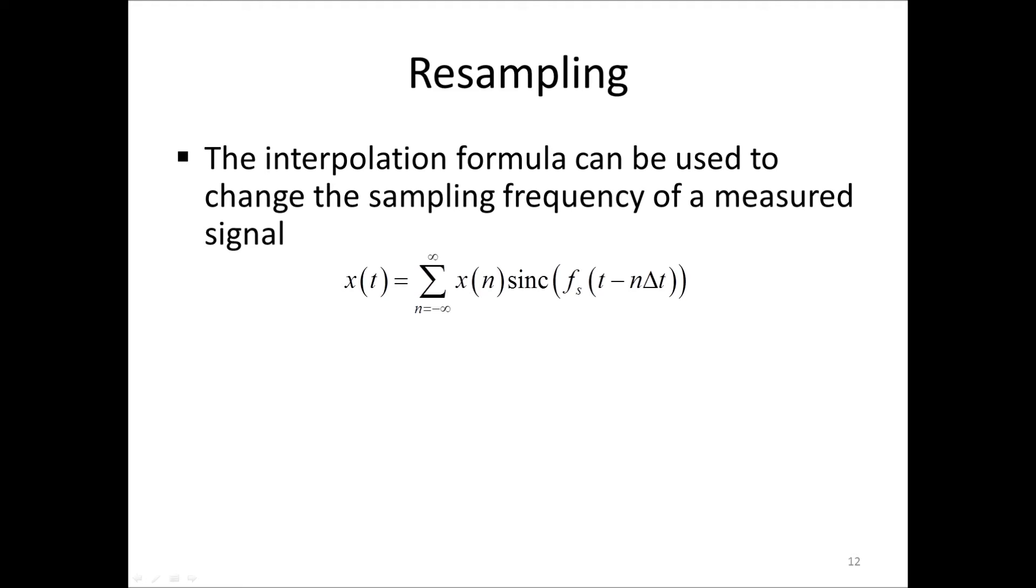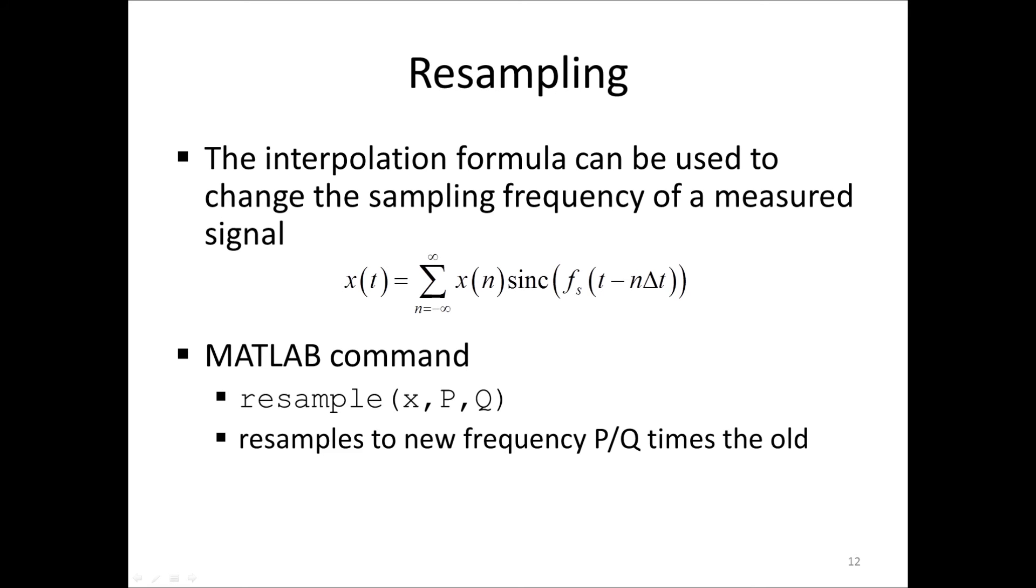Finally, in this video, we will talk briefly about resampling. The formula for the sampling theorem, or interpolation, that we described earlier, can be used to resample a measured signal. That is, to recalculate the analog signal corresponding to a higher or lower sampling frequency than was originally used. This can be easily implemented in MATLAB by using the resample command with the syntax of resample x p q, where x is the data vector with the data in a column, and p and q are integer numbers, and the signal x is resampled to a new sampling frequency equal to p over q times the old one. Naturally, if the new sampling frequency is lower than the original, the signal needs to be low-pass filtered before the resampling. This is automatically taken care of by the resample command.